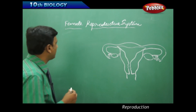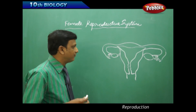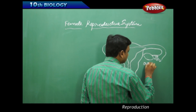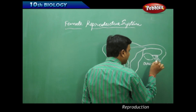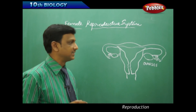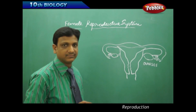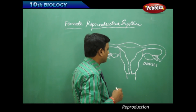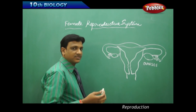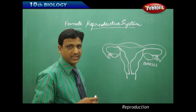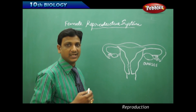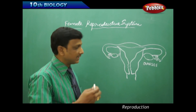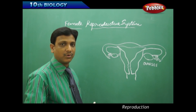Now let us look at the female reproductive system in humans. It consists of a pair of ovaries, which play an important role in reproduction. Ovaries produce the female gametes. The female reproductive system is located in the lower abdomen, inside the body. In males, the testes are located outside the body in a pocket-like structure called the scrotum. In females, the ovaries are located inside the body in the lower abdomen.